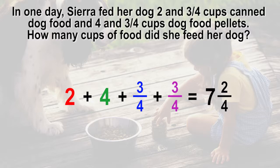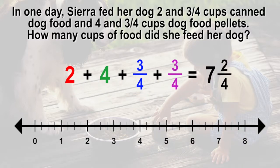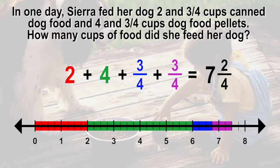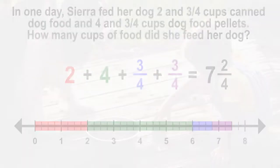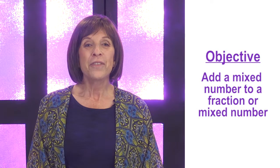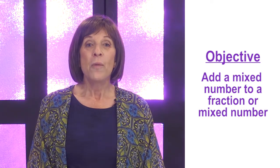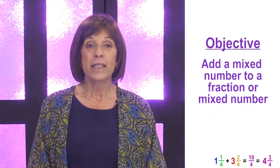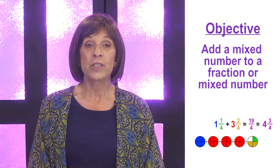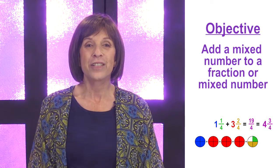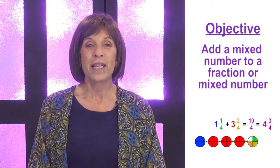This strategy can be justified using a number line or an area model partitioned into one-fourths segments: two plus four plus three-fourths plus three-fourths gives the sum of seven and two-fourths. The objective for this lesson was to add a mixed number to a fraction or a mixed number. We met this objective by solving mixed numbers with different strategies and justifying our solutions using the commutative property and models.